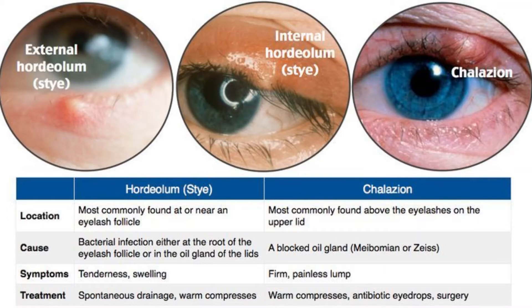The second is an internal hordeolum — a stye which is inside your eyelid, most caused by an infection in an oil-producing gland in your eyelid. You can also get a stye if you have blepharitis. Blepharitis is the condition that makes your eyelids red and swollen at the base of the eyelashes.